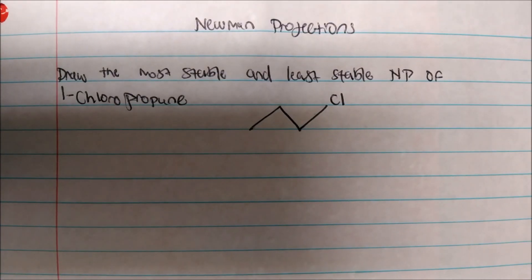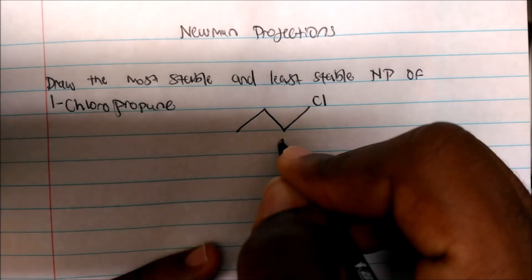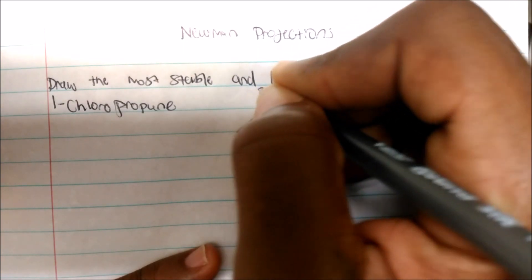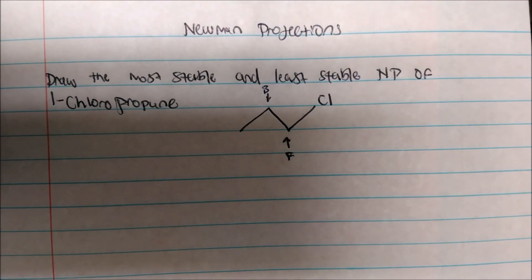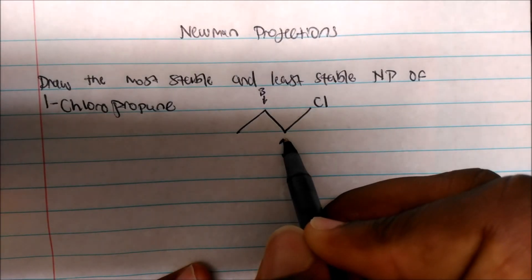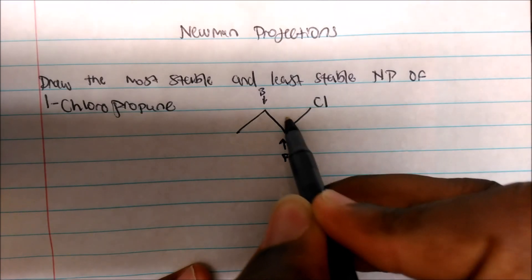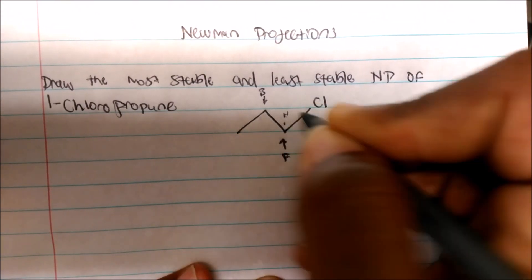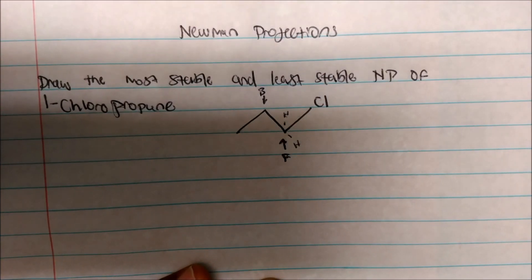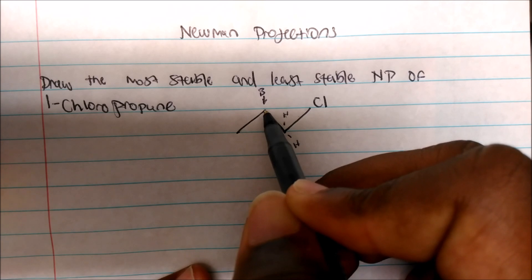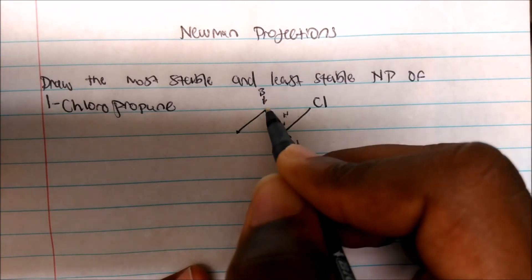After that, essentially what you want to do is identify your front and back carbon. So I'm going to say this is my front and this will be my back carbon. The second thing you want to identify is what is bonded to these carbons — be careful. On the front carbon, I have two hydrogens bonded to a chlorine. And on the back carbon, we have a methyl group and two hydrogens.